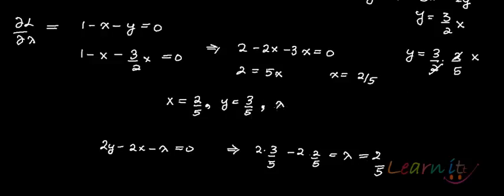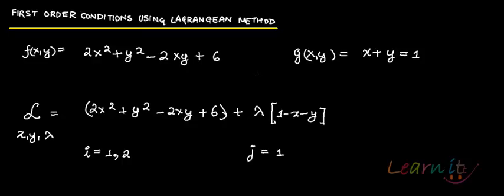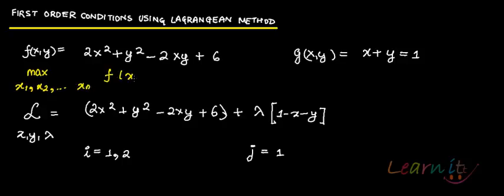So you've got the values of x, y, and lambda. Now let's put this in a more general form. The objective function here was in two variables, but it could be a function of n variables — you could have max of f(x₁, x₂, ..., xₙ). Here there was only one constraint, but in general there could be m constraints.